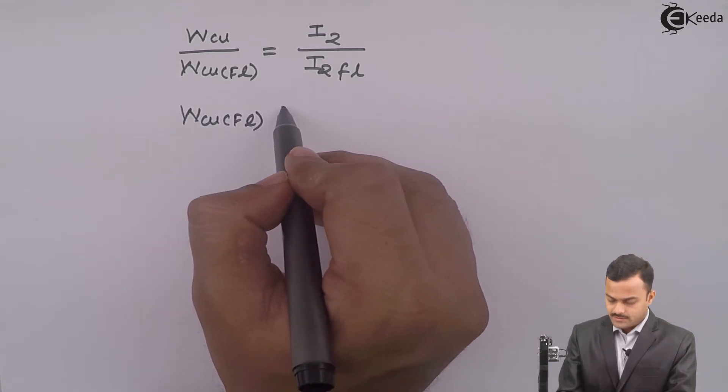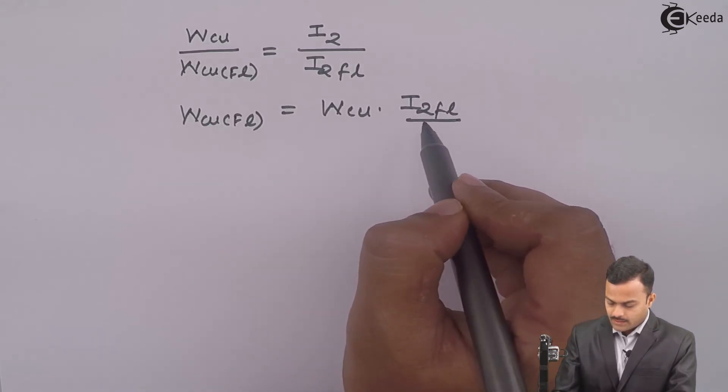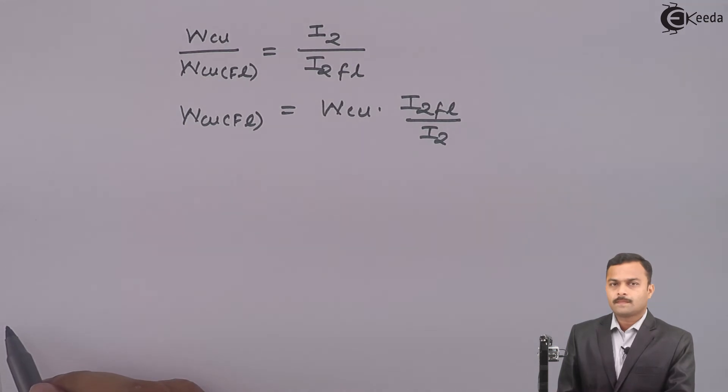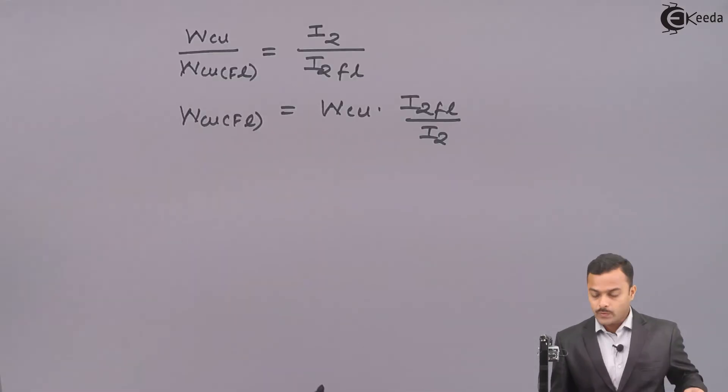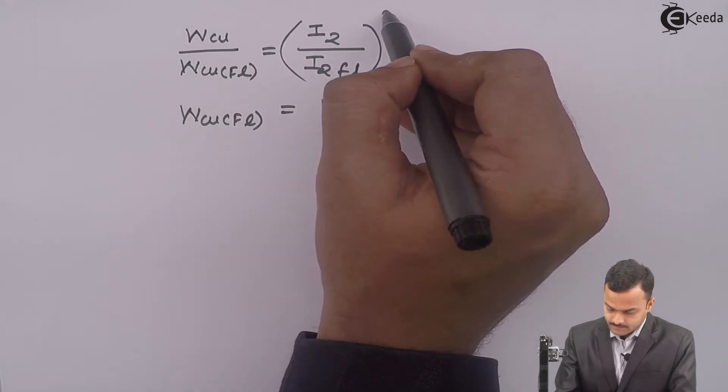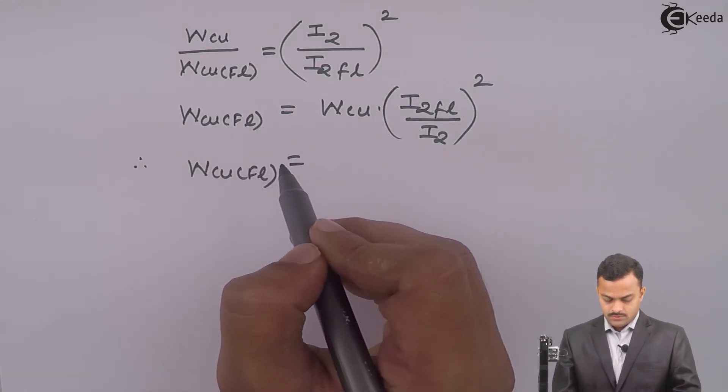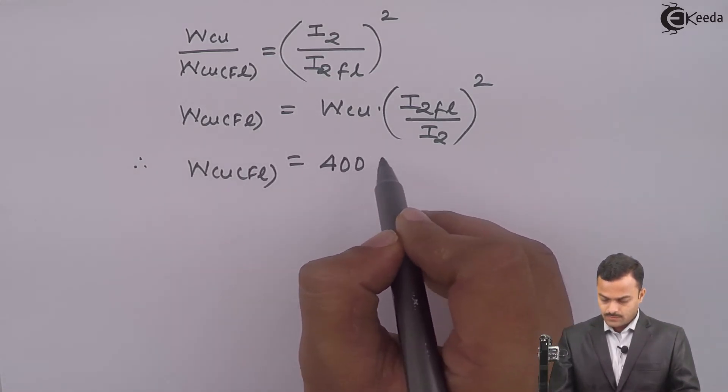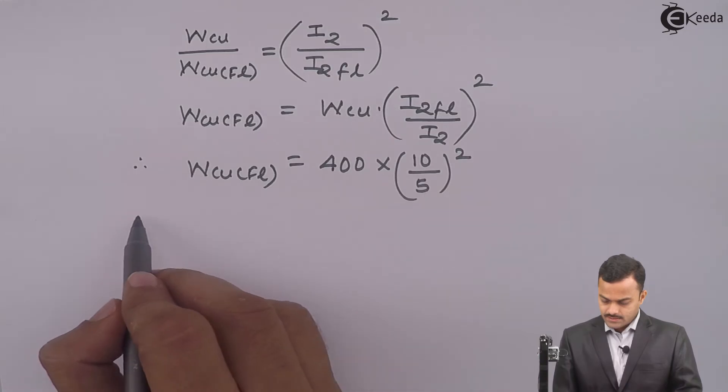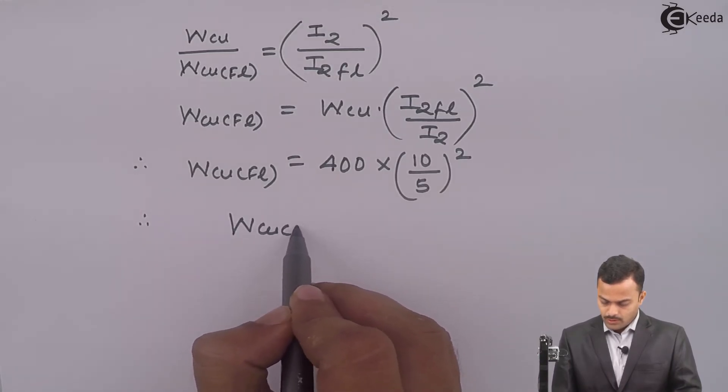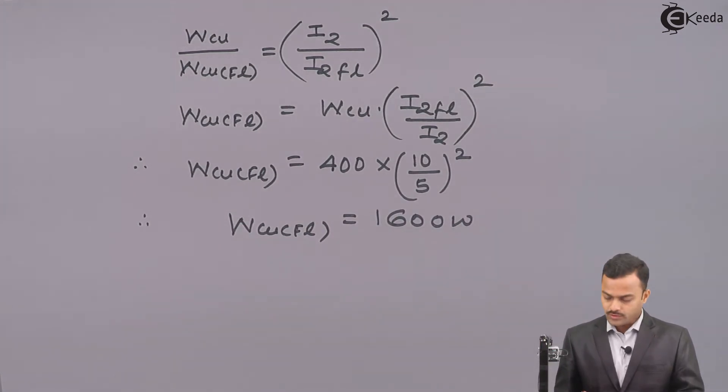So WCUFL is WCU multiplied by I2FL divided by I2. If you see here, it is directly proportional to square of current. So actually it is square. So WCUFL equals 400 times (10/5)². So if you solve this, you will get full load copper loss WCUFL equal to 1,600 Watt. A very important finding.